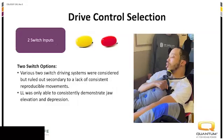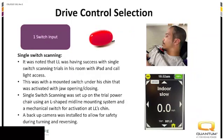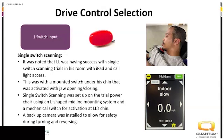We talked about trying two different switch options but had to rule those out — he only had jaw open and close, and he couldn't even move his jaw over just a little bit to activate a second switch. He really could only hit one right below his chin. So we landed on one switch input with single switch scanning. Keeping in contact with our speech therapist, he was using the low-tech letter quadrant board for communication, but they were trialing using a switch under his chin for activating an iPad — so we thought, why can't you drive your chair that way too?